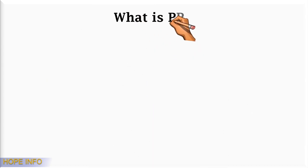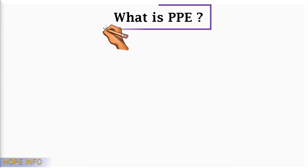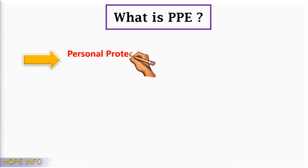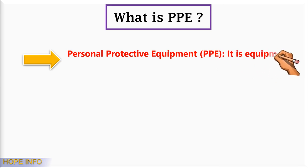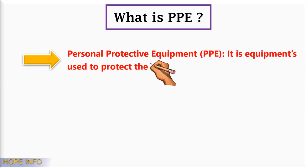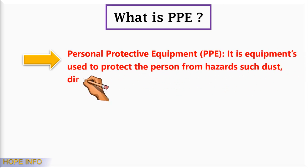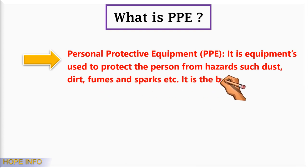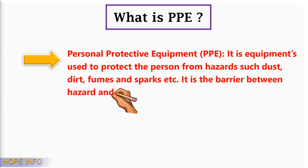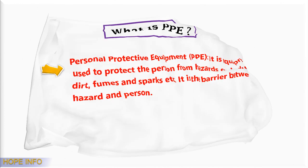What is PPE? Personal protective equipment (PPE) is equipment used to protect persons from hazards such as dust, dirt, fumes, and sparks. It acts as a barrier between the hazard and the person.